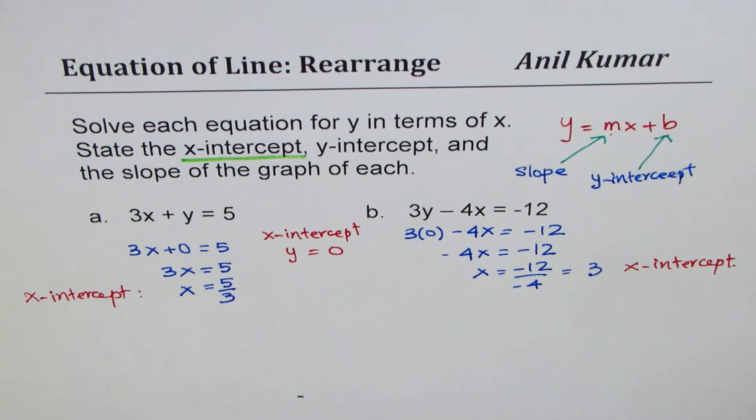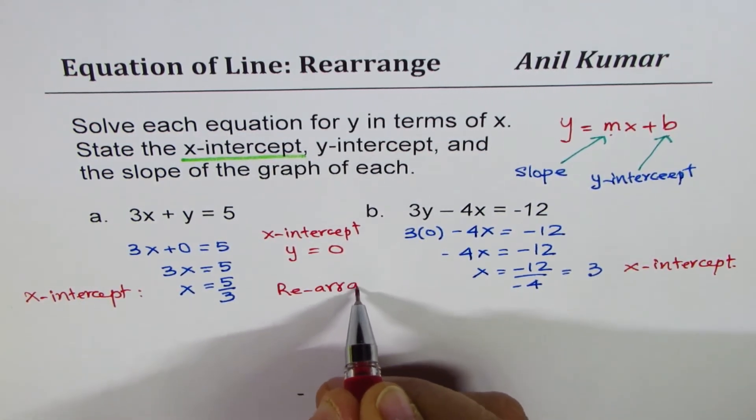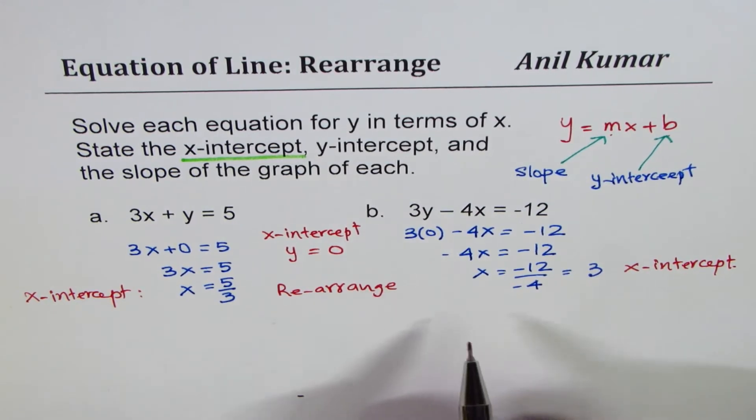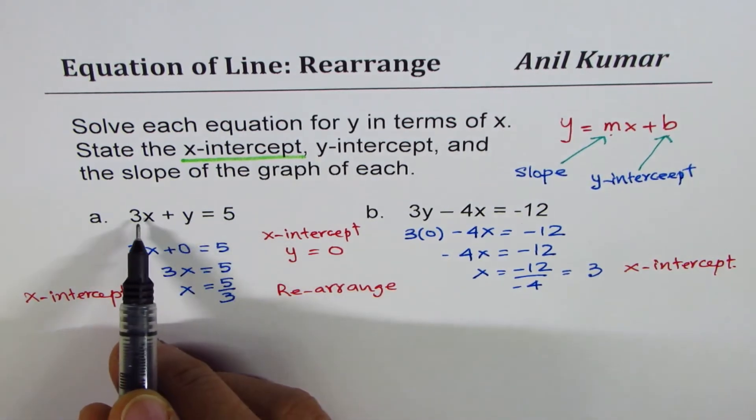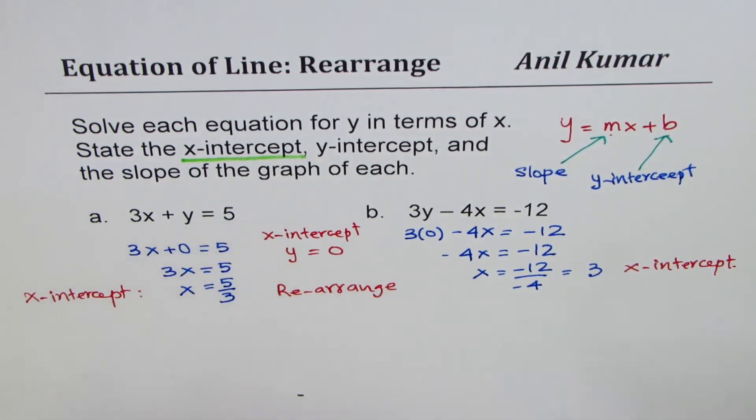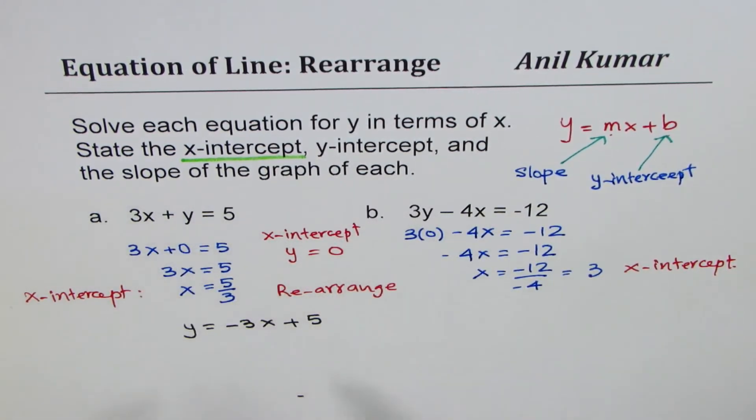Now we will rearrange to get y-intercept and slope. So we have 3x plus y equals to 5. Taking minus 3x both sides will give us y equals to minus 3x plus 5. So in one step, you could do this one. Now from here, you can read y-intercept and slope.